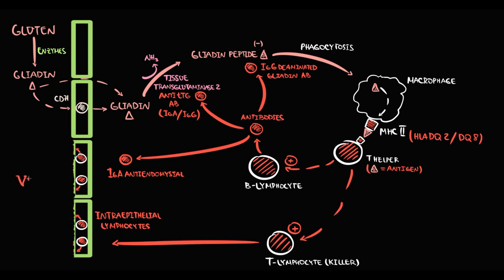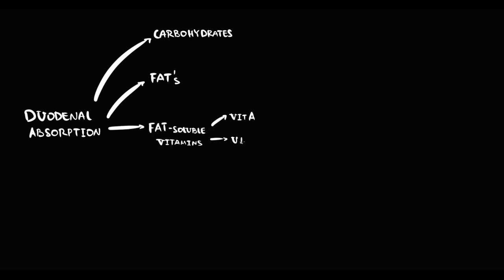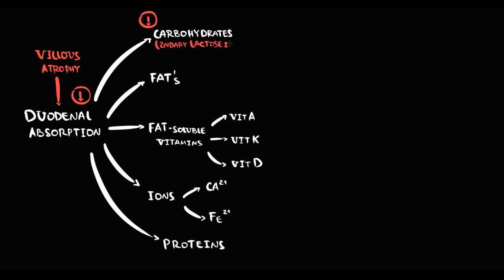Intestinal villi provide a huge absorption capacity for enterocytes in the duodenum, where we absorb carbohydrates, fats, fat-soluble vitamins such as vitamin A, vitamin K, and vitamin D, as well as ions like calcium and iron, and proteins. In celiac disease, once villus atrophy develops, it becomes very hard for the duodenum to absorb sufficient nutrients. First, it causes decreased carbohydrate absorption — without brush border enzymes and intestinal villi, we cannot digest lactose, resulting in secondary lactose intolerance.